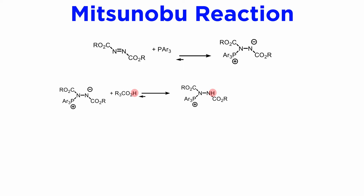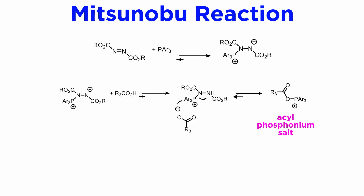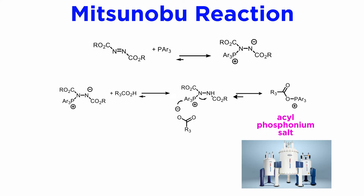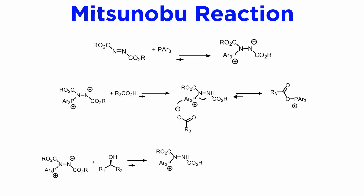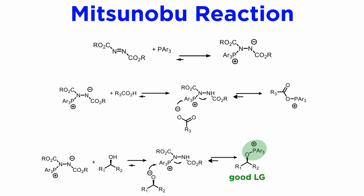The zwitterion is protonated by the acid, yielding a positively charged species, which can react with the main anion — the carboxylate — which displaces the diacylhydrazine at phosphorus and forms an acylphosphonium salt. This acylphosphonium species can be detected by NMR, but it is formed reversibly and is a dead-end intermediate. Although less acidic, the alcohol is able to form a small concentration of alkoxide through the action of the carboxylate base, and this will form an oxyphosphonium salt, which is the key intermediate in the reaction. The oxyphosphonium is an excellent leaving group, and at this point the carboxylate attacks in SN2 fashion and gives the ester with inversion of configuration.